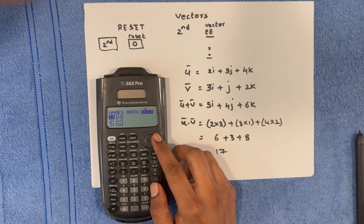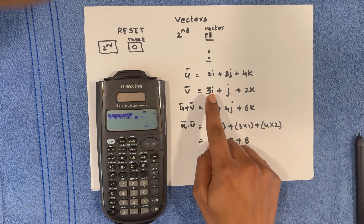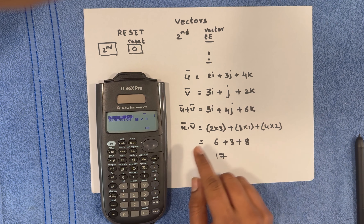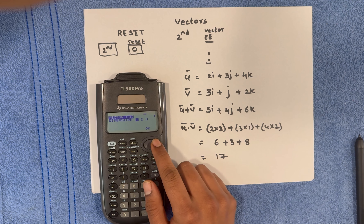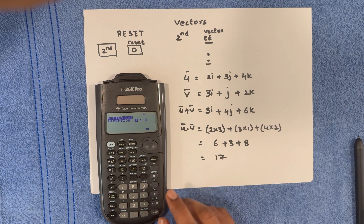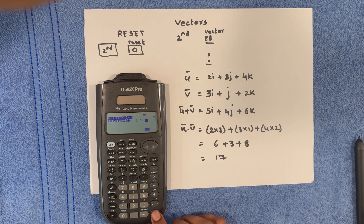Go to Edit and choose number one, which is for the first vector. You can set the dimension to one, two, or three. In our question the first vector has three components, so it is three-dimensional. Select dimension 3 and hit OK twice.